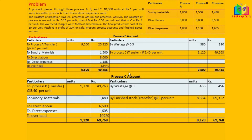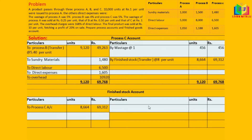Now we prepare the finished goods account. On the debit side, we write the cost of 8,664 units transferred from process C. On the credit side, we write the selling price: 8,664 units × ₹10 = ₹86,640, as the final product was sold at ₹10 per unit. Balancing the account gives the profit figure.